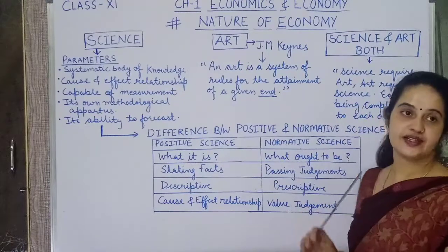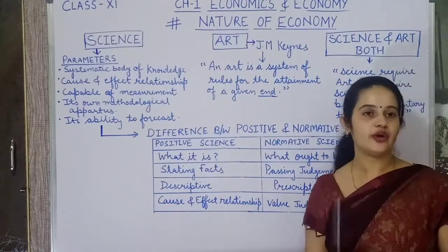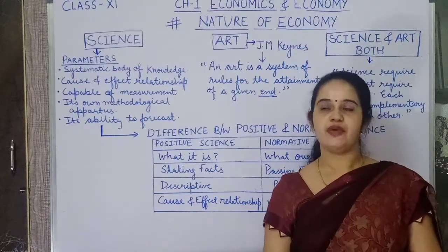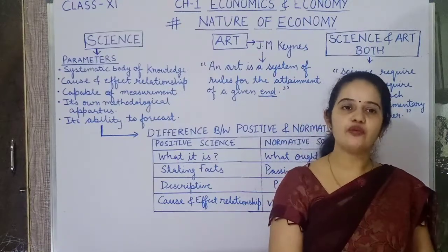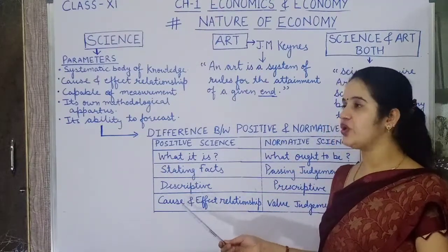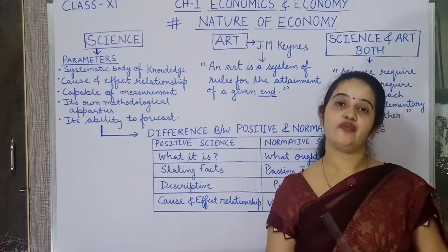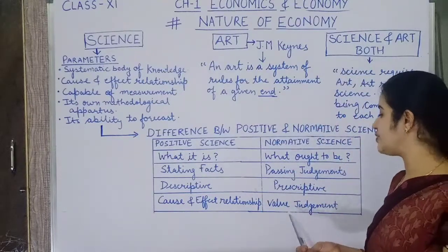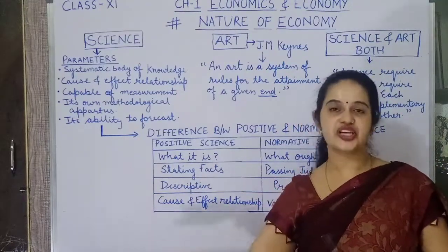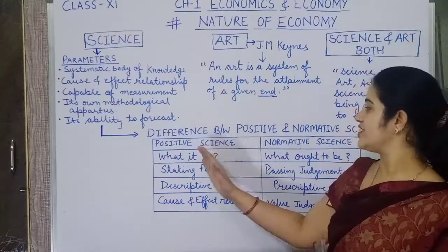The last point: positive science studies cause and effect relationships, whereas normative science studies value judgments. For example, 'if you heat water, the temperature of the water goes up' — this is a positive statement showing cause and effect. But 'don't put your hand into hot water' — this is normative science because here we are giving a value judgment. I hope by this you can easily find the difference between positive and normative science.